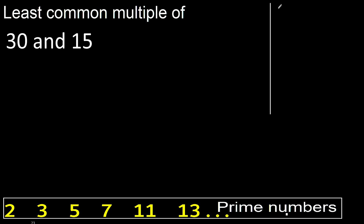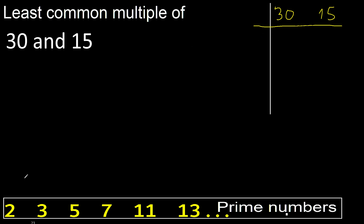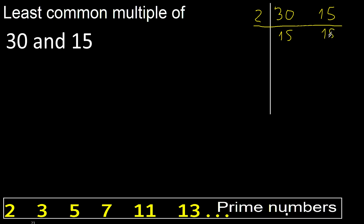30, 15. Can any be divided by 2? Yes, 30 divided by 2 is 15. 15 cannot be divided by 2, therefore equal.